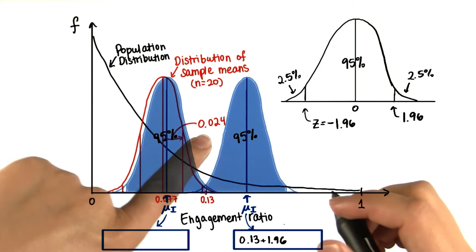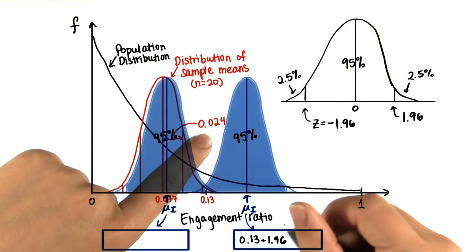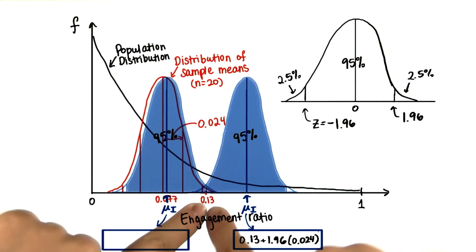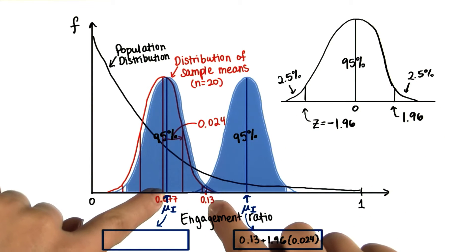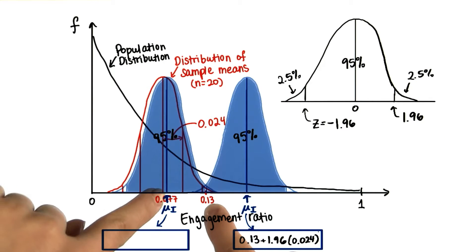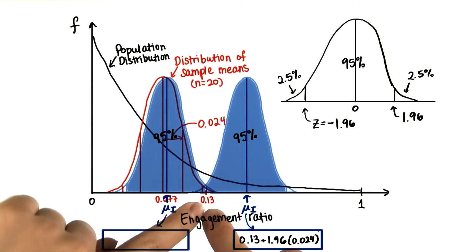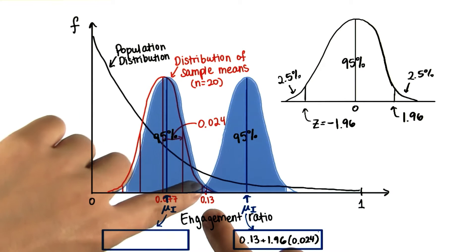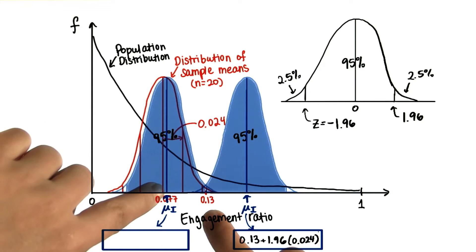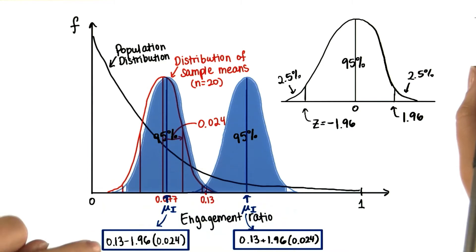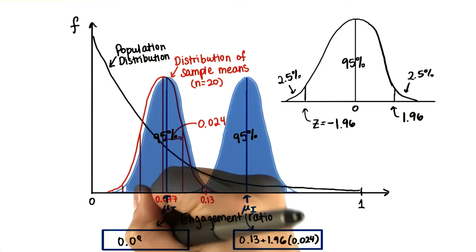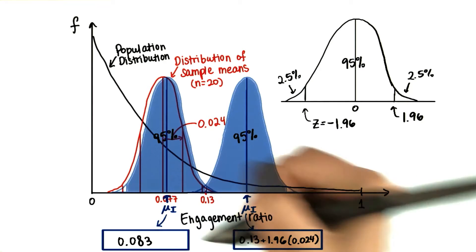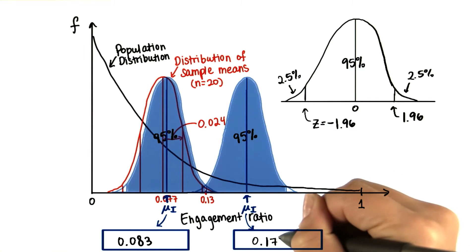We found that 1 standard deviation is 0.024. However, if the sample mean is actually greater than the true population mean, then the true population mean is 0.13 minus 1.96 standard deviations. Calculating these values, we get approximately 0.083 and 0.177.